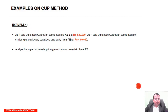Let's look at a few examples on the CUP method. AE-1 sold unbranded Colombian coffee beans to AE-2 at rupees 5 lakh. So you have AE-1 and AE-2.